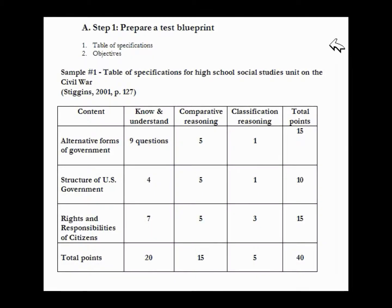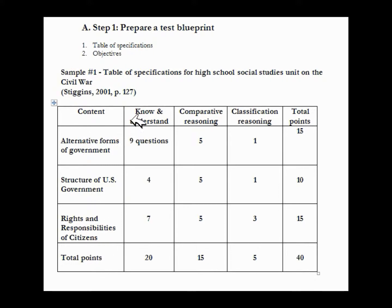One of the tools for beginning the test development process is the test blueprint. What it looks like is a two-way table in which the columns delineate the specific content you would like to have — content is in the first column — and the second, third, and fourth columns are the taxonomy outcomes or taxonomy categories that the content will fit in.